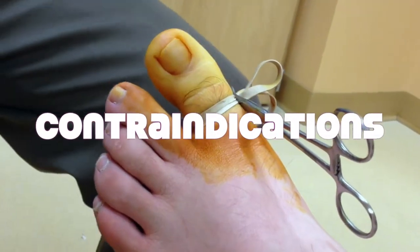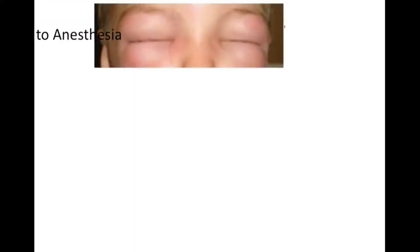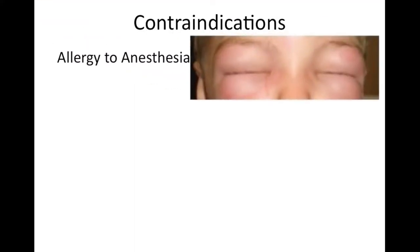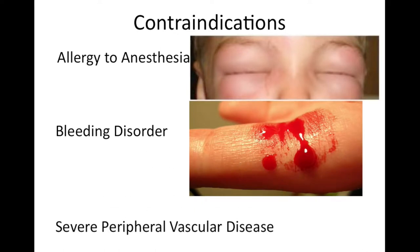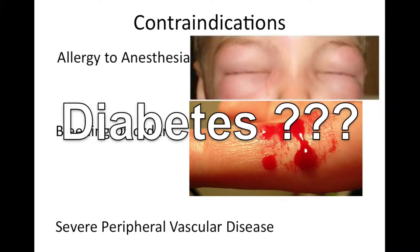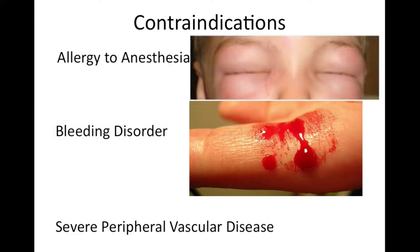When should we not do the procedure? If the patient is allergic to local anesthesia or has a bleeding disorder, and also if someone has severe peripheral vascular disease, you might want to reconsider. Some people say there's a relative contraindication in patients with diabetes, but I think it's better to assess their peripheral vascular status rather than simply whether they have diabetes. Recurrent paronychia can cause serious complications in a patient with diabetes.